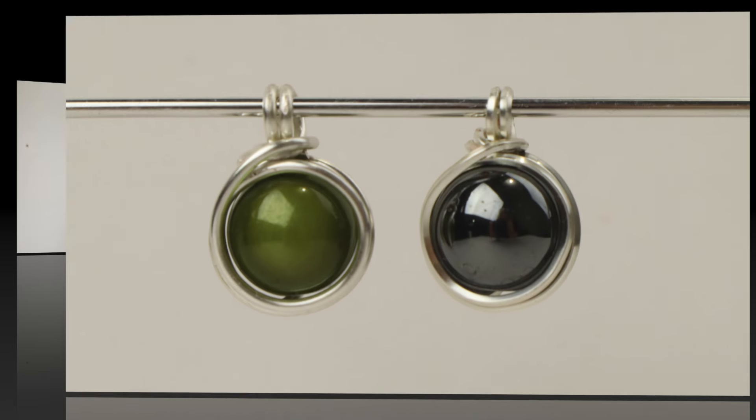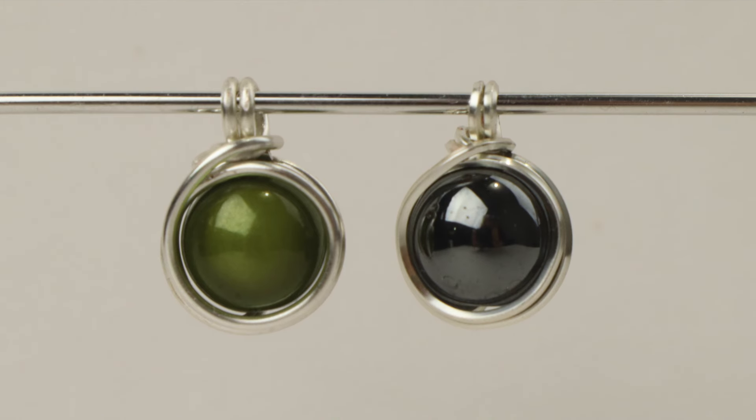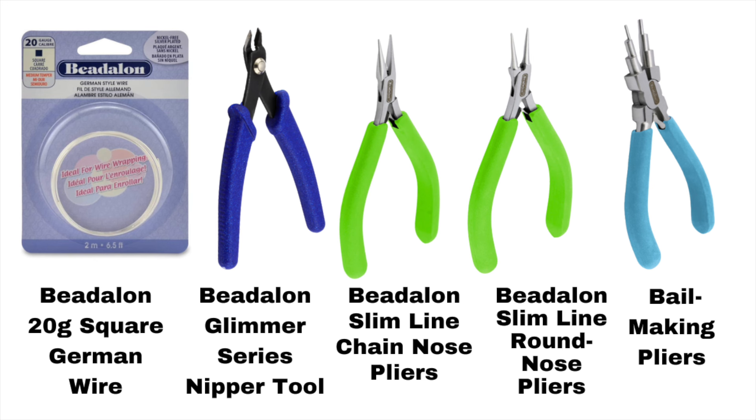Hello live wires, Heather Boyd Wire here, and today it's Tip Tuesday. Today I had a special request from Judy for a simple pendant with a double loop for hanging. I am using the Beadalon 20 gauge square German wire.